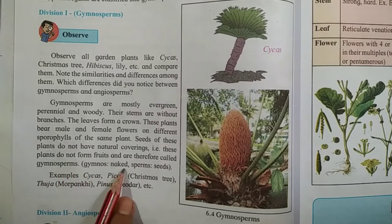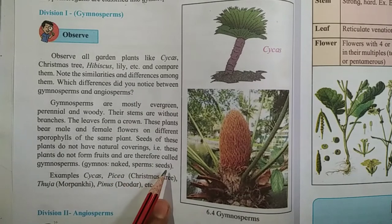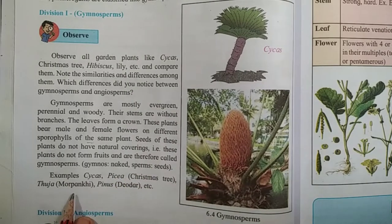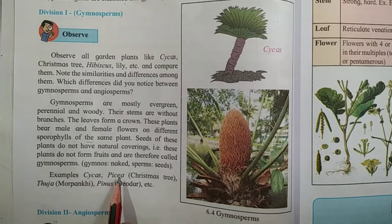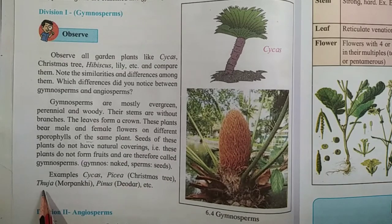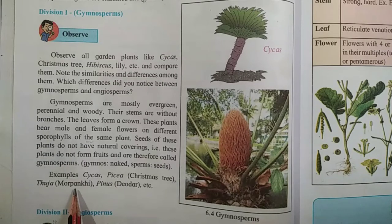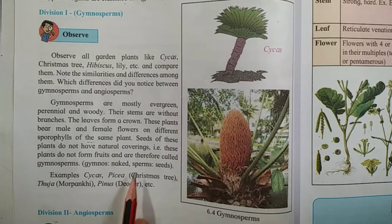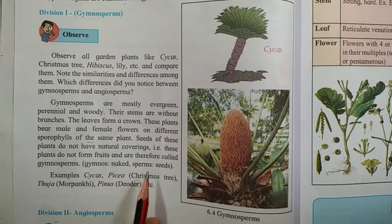Gymno means naked and sperms means seed. Examples of Gymnosperms are: Cycas, Picea (the Christmas tree), Thuja (also called mor pankhi), and Pinus (the Devdar tree). These are the examples of Gymnosperms.